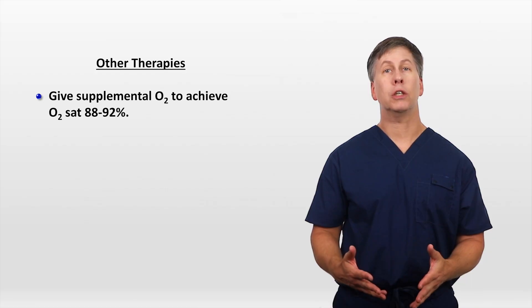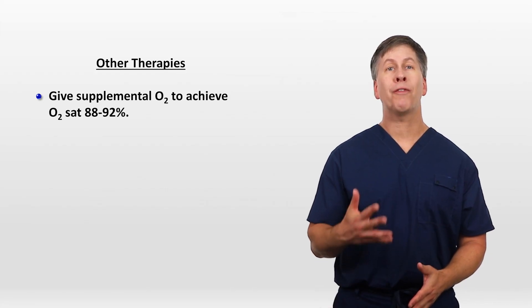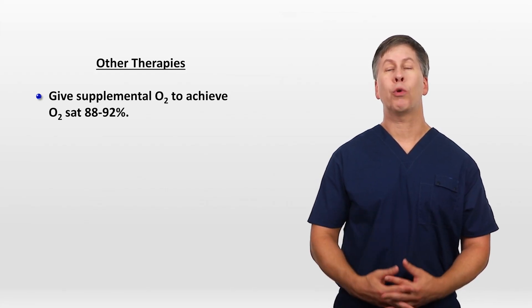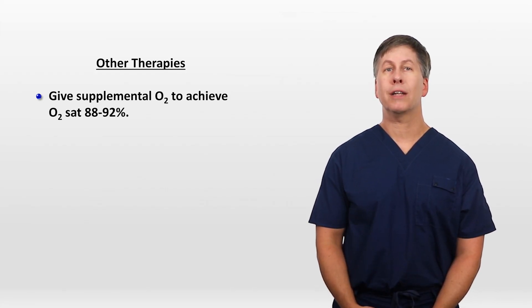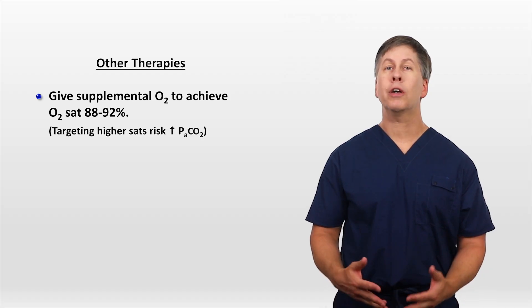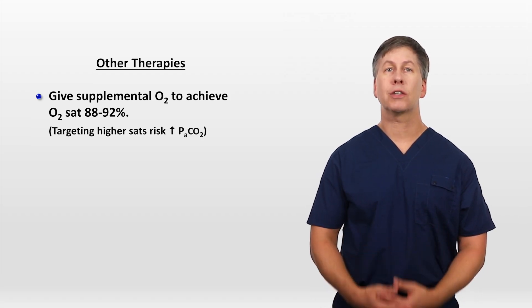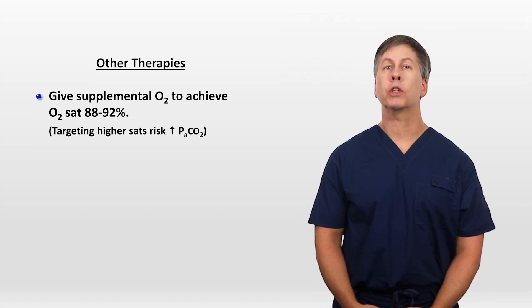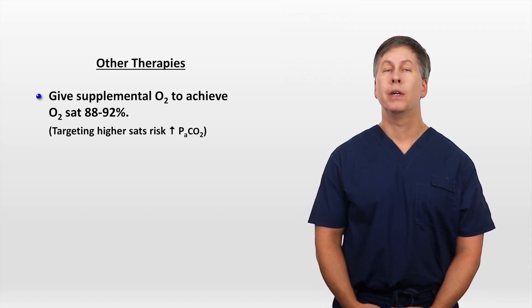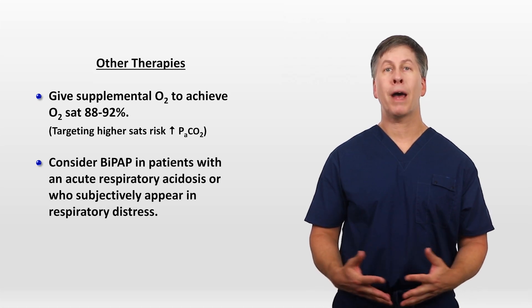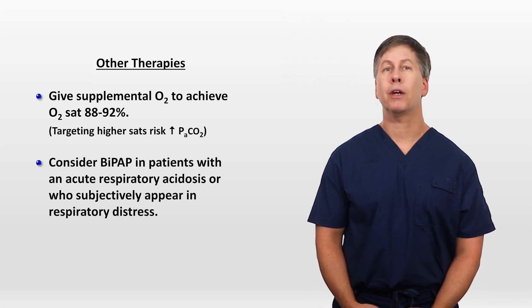With oxygen, only provide it to achieve a peripheral O2 sat of 88–92%. Targeting higher sats risks worsening hypercapnia. Consider BiPAP in patients with acute respiratory acidosis or who subjectively appear in respiratory distress.